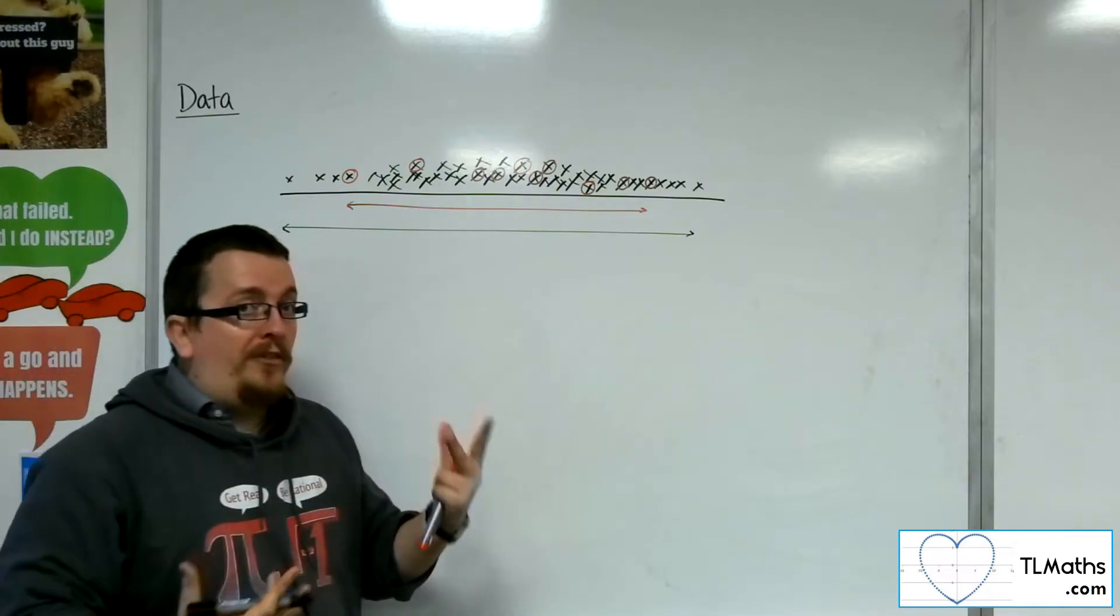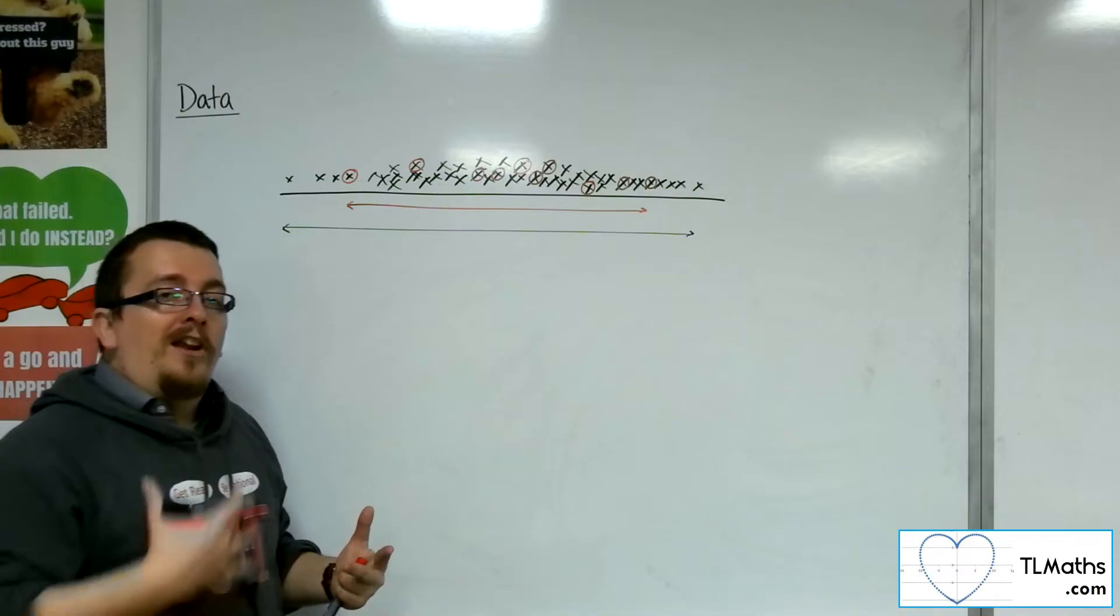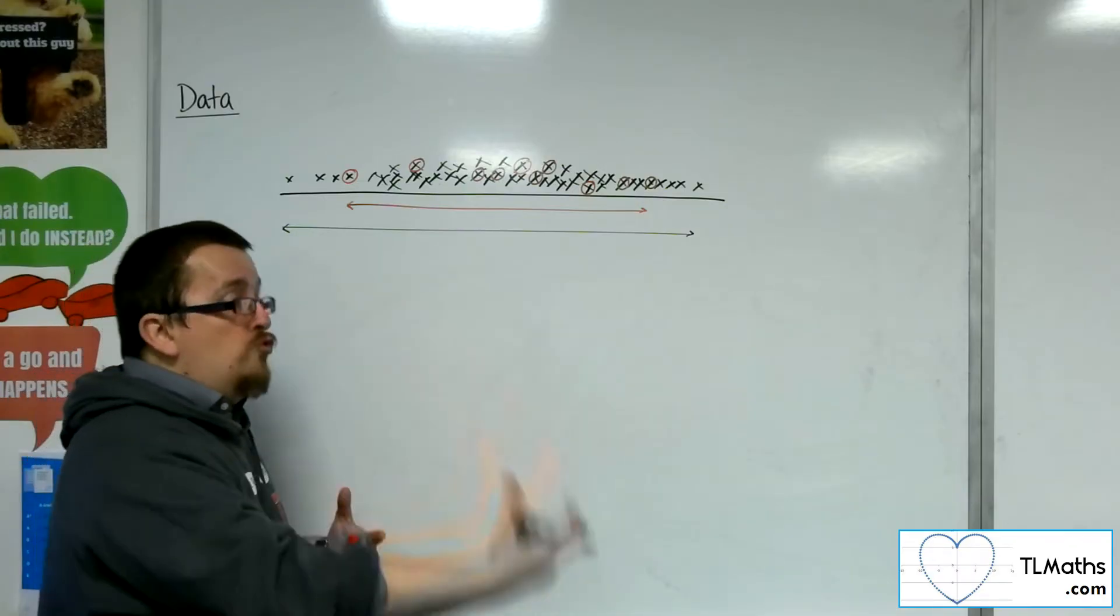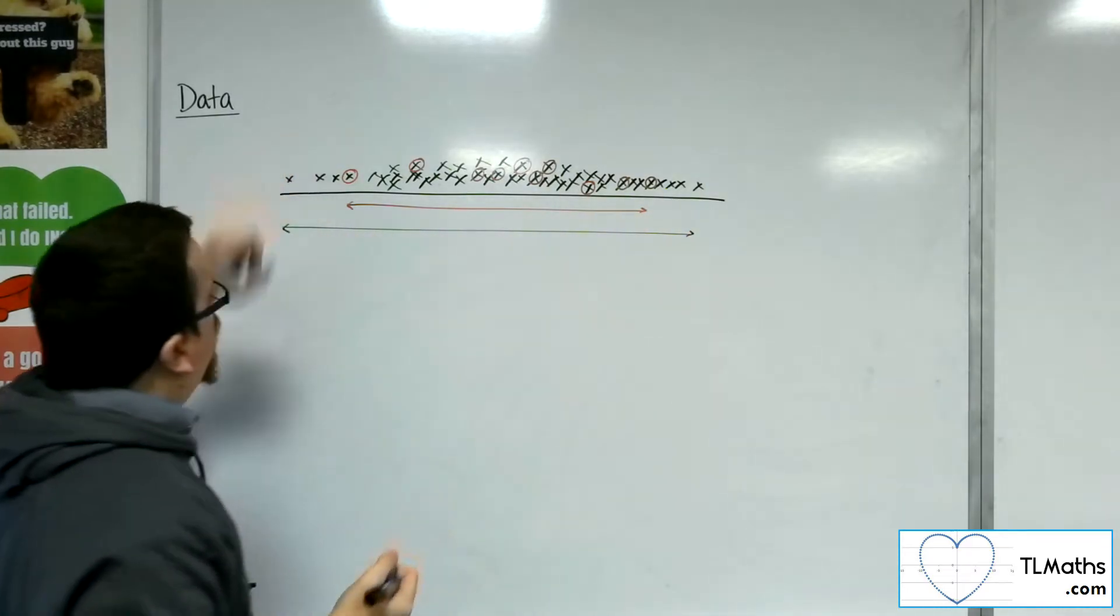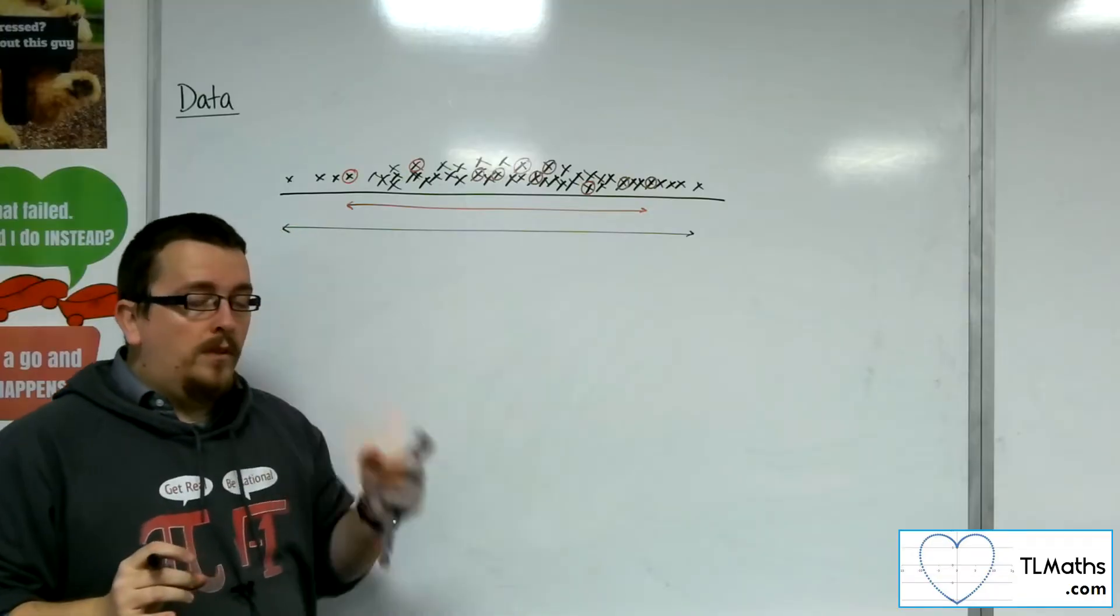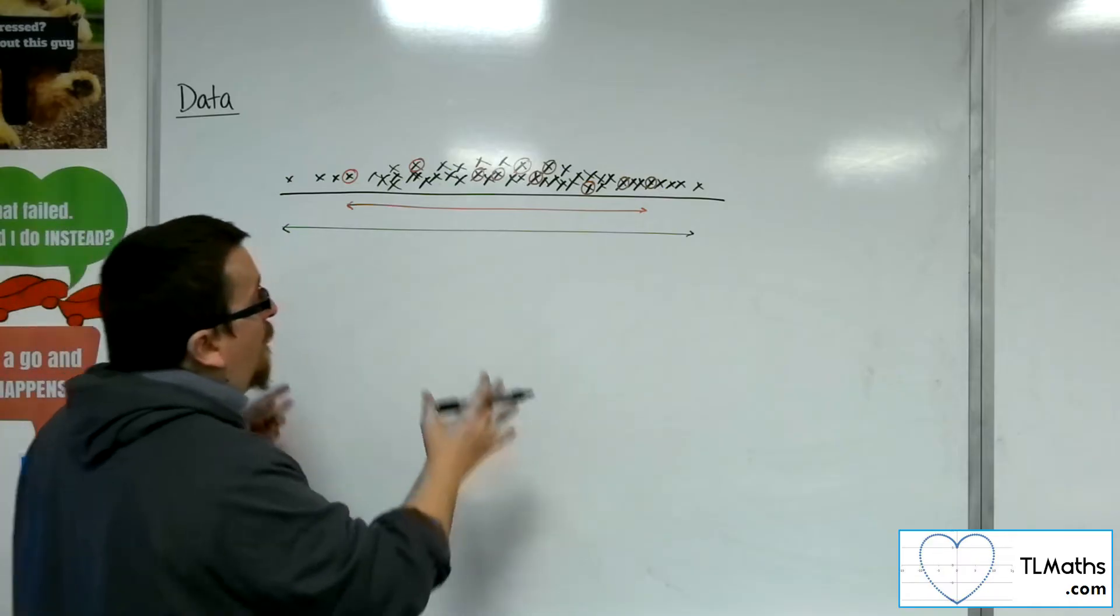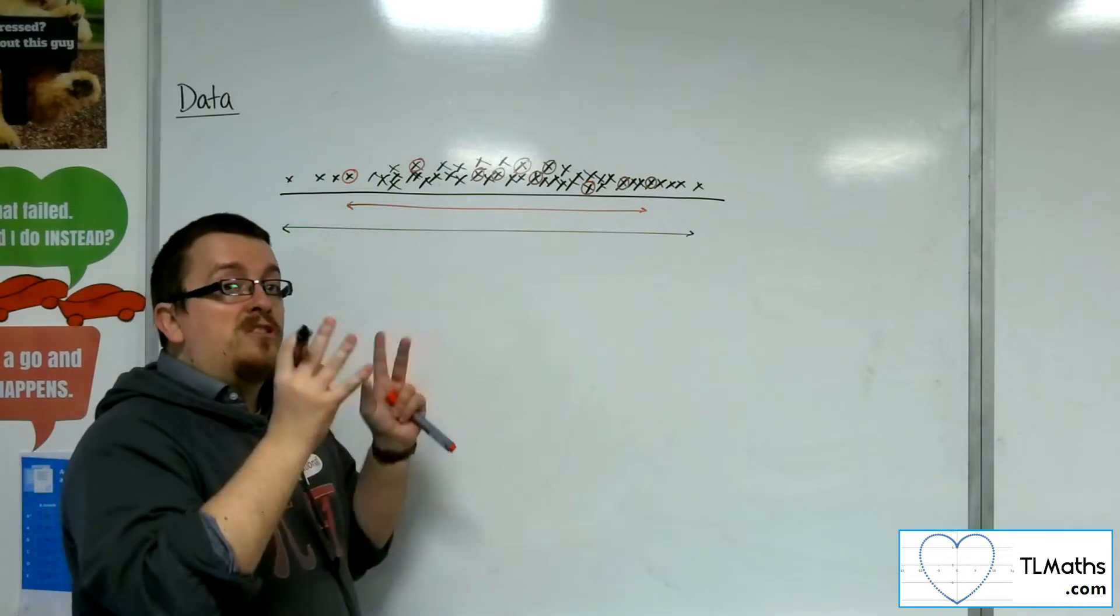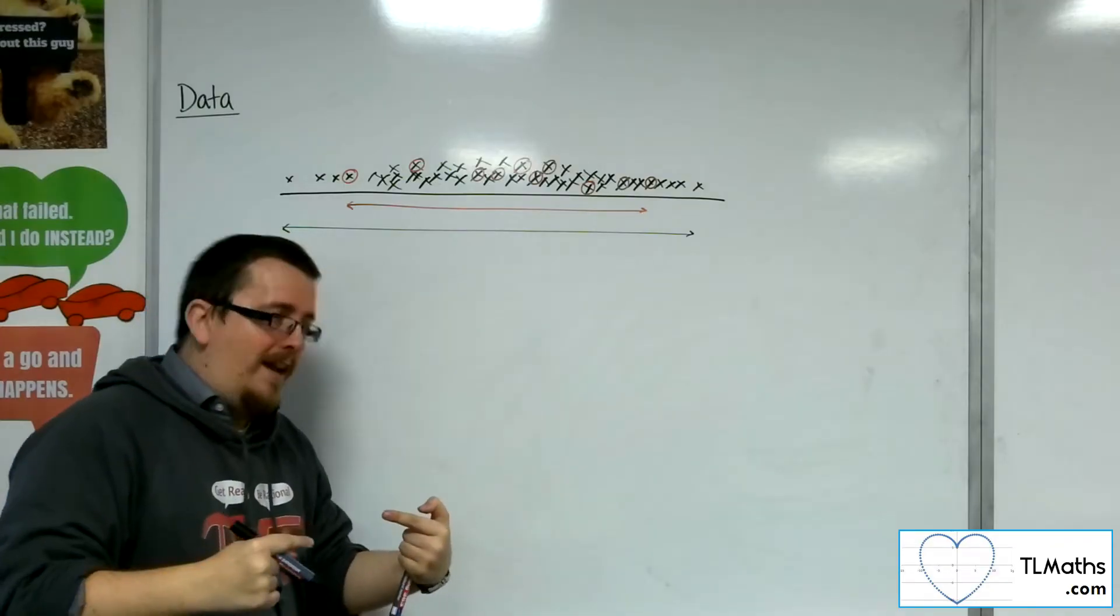And in all likelihood, because I'm randomly selecting each data item, the likelihood that I pick out extreme values, so either very tall elm trees or very short elm trees, is actually quite small. So the standard deviation that I get from my sample is likely to be smaller than the standard deviation of the population.